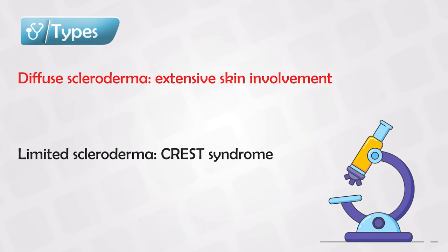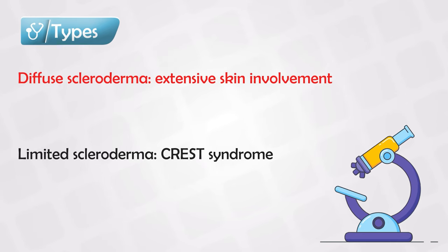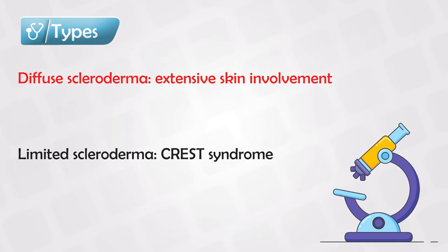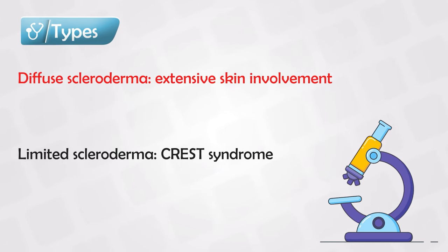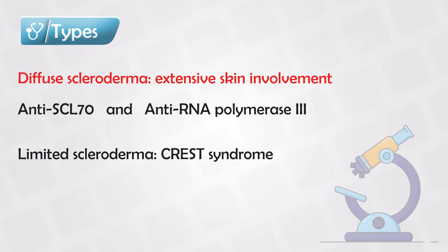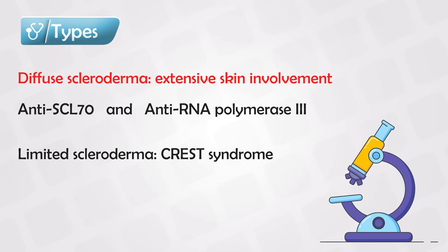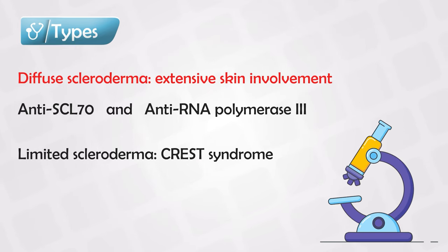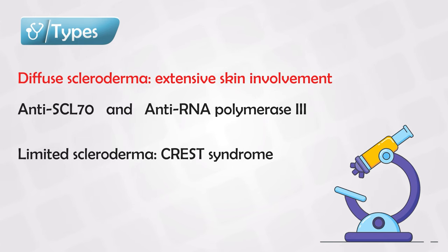In diffuse scleroderma, there is widespread involvement of the skin, as well as visceral or intra-abdominal involvement. These visceral symptoms tend to start very early, and the progression is very rapid. It is associated with anti-scleroderma 70 antibody, which is a DNA topoisomerase 1 antibody, and anti-RNA polymerase 3 antibody.